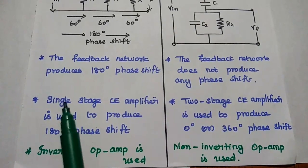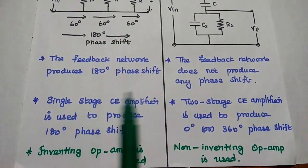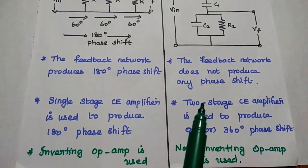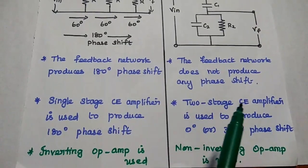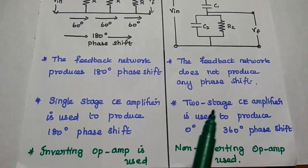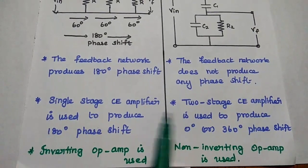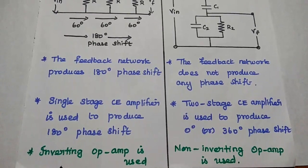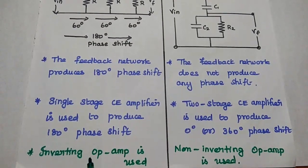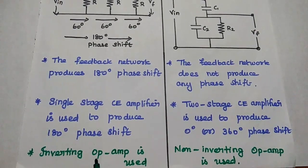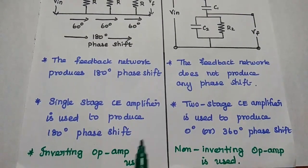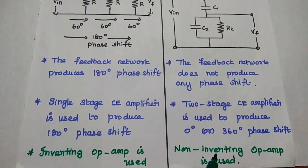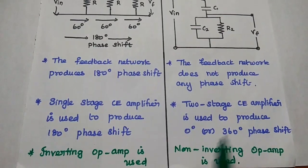In the RC phase shift oscillator, a single stage CE amplifier is used. In the Wien bridge, a two-stage CE amplifier is used. When implemented with op-amps, an inverting op-amp is used as the amplifier in the RC phase shift oscillator, whereas a non-inverting op-amp is used for the Wien bridge oscillator.